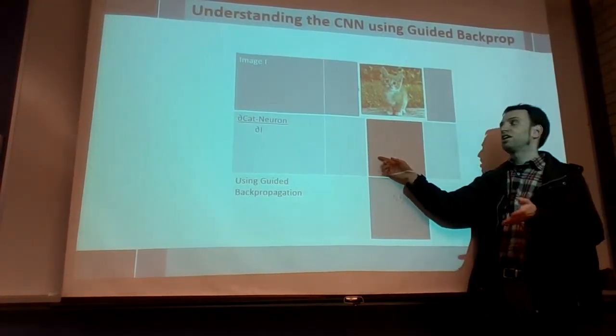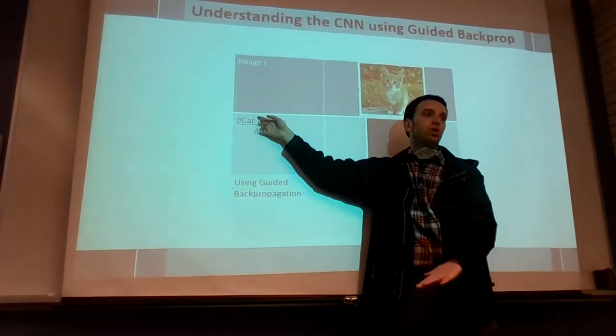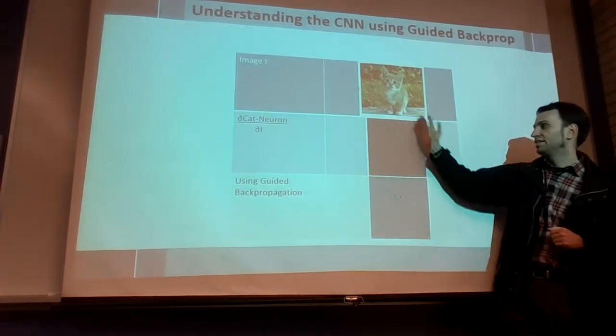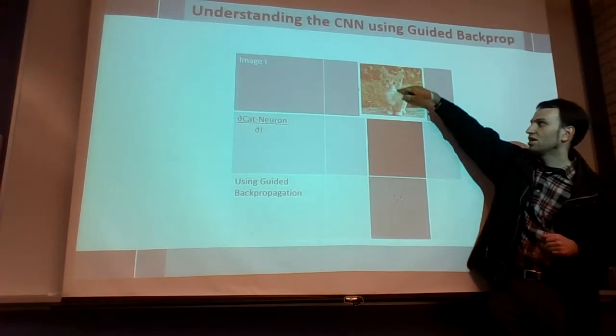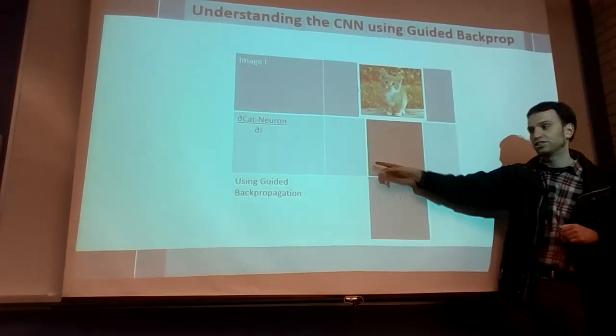In other words, for each pixel figure out, if I change it a little bit, is it going to mess up cat neuron? Is it going to make it low? Or is it really going to make it high? So if you compute it and then you visualize it, what you'll see is, yes, the pixels that are on the cat do matter for the cat neuron, those pixels do not matter. So it kind of works. However, the thing is very messy.